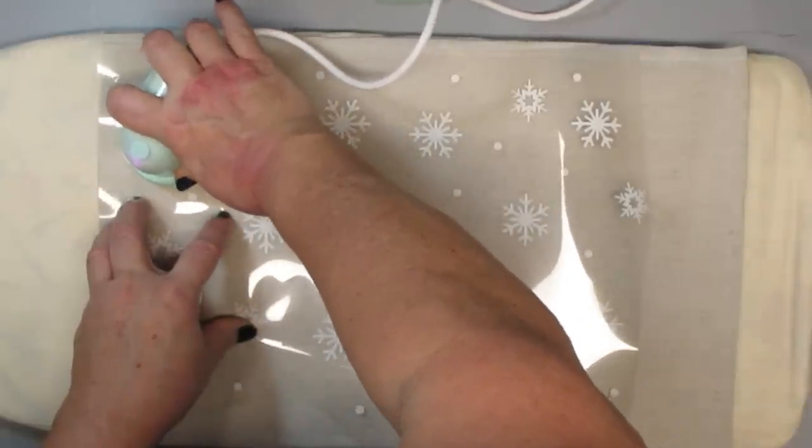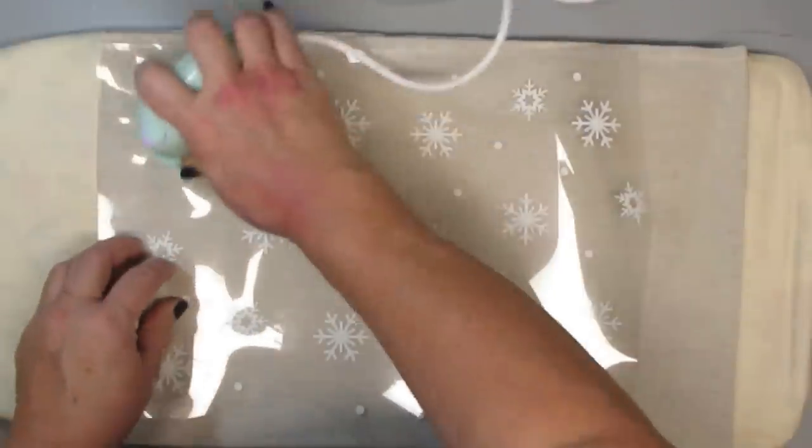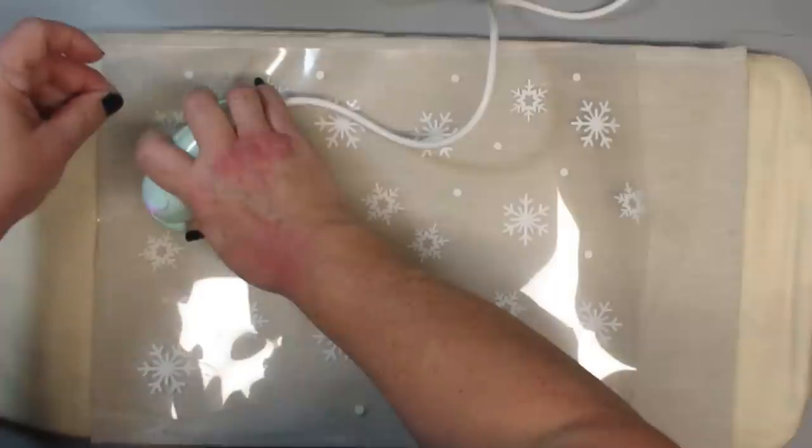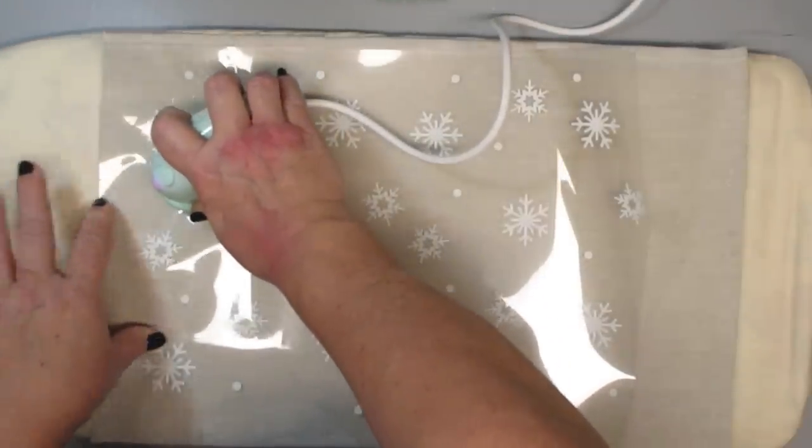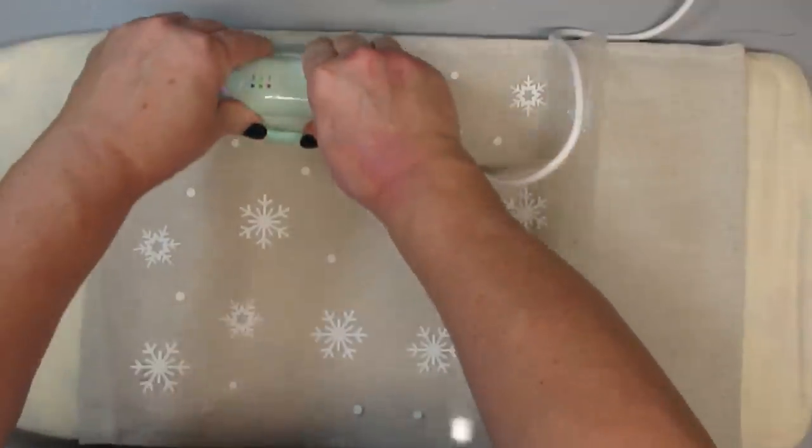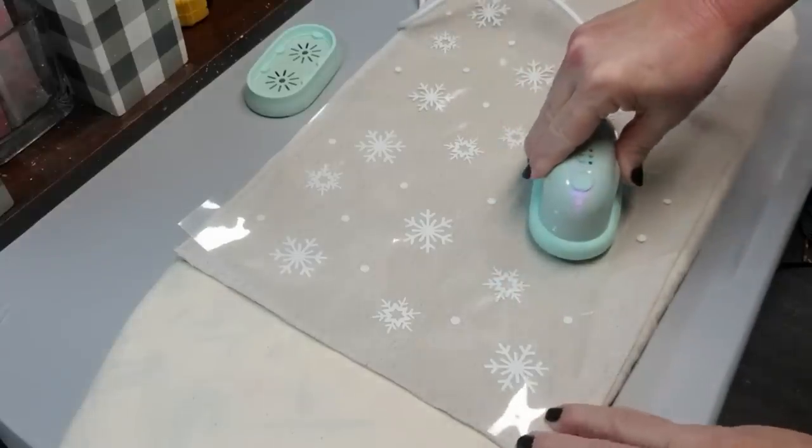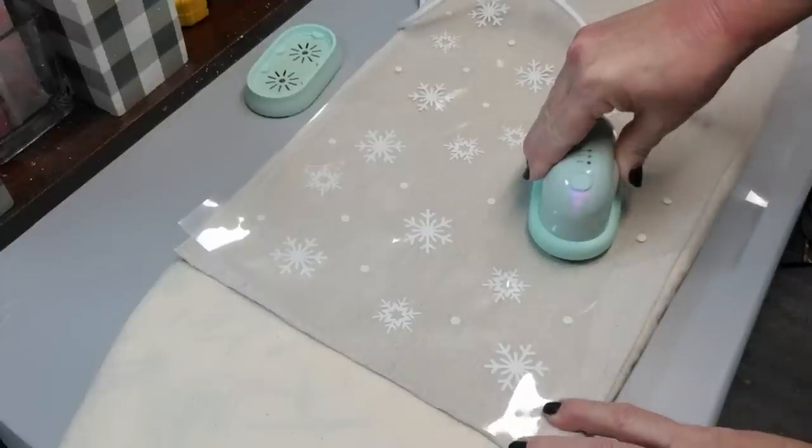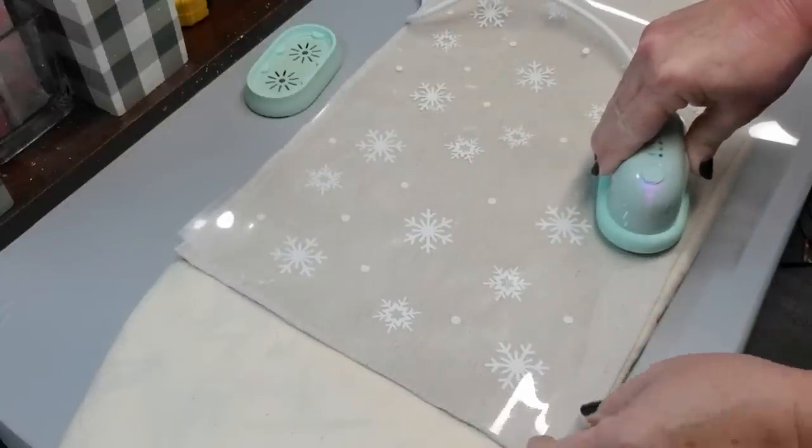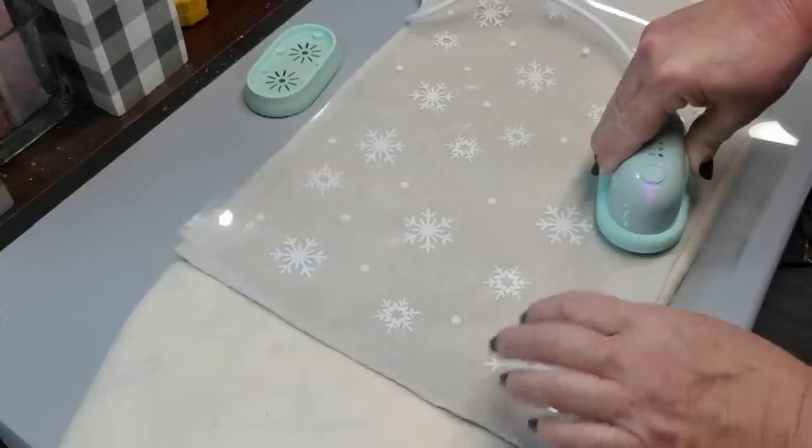Then I simply started to apply the heat press to each of the snowflakes and the dots with this thick plastic backing that is on the Cricut vinyl. It lifts off really well so you can see when your items are already attached to the fabric. I think it only took me about 10 to 15 seconds per item and I just kind of pulled up the plastic and if there was anything still stuck onto the plastic itself I just went over it with the heat press one more time.